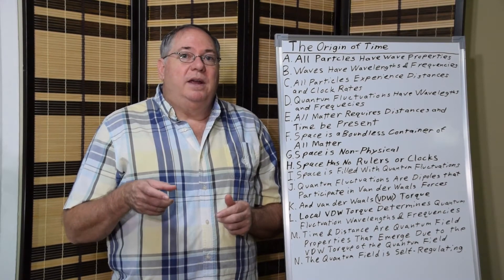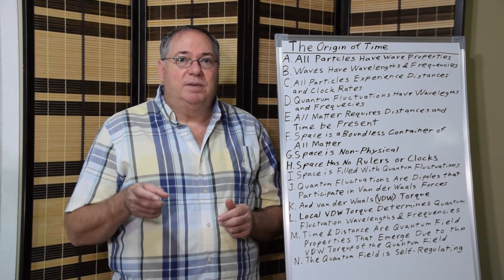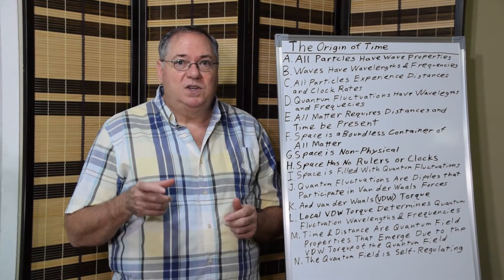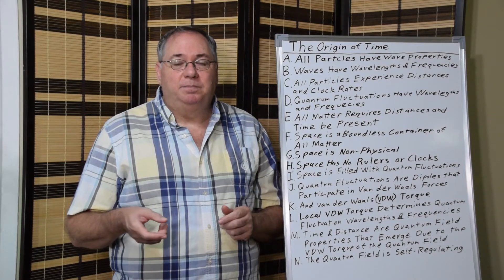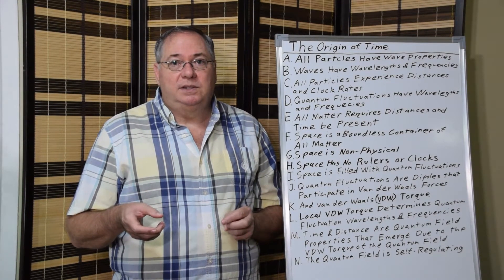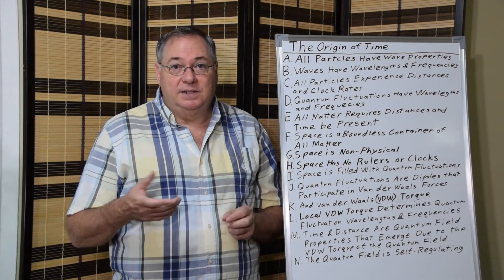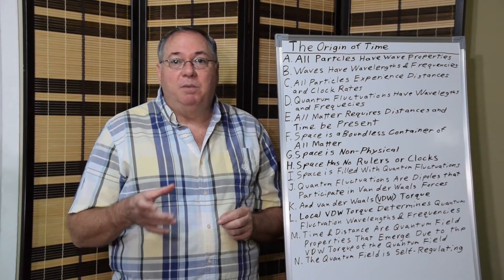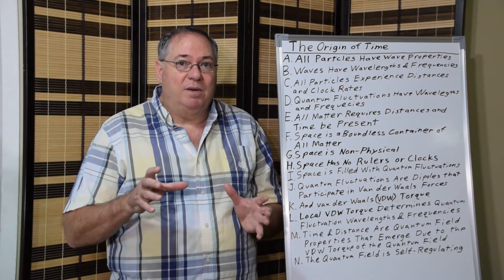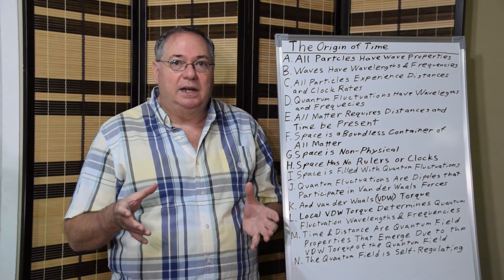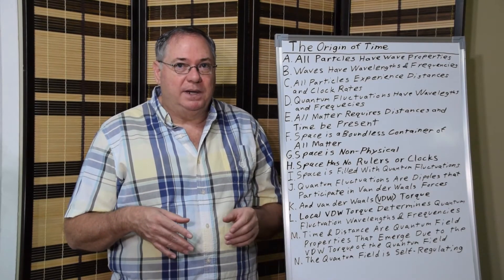And in turn, the wavelengths and frequencies of the quantum fluctuations give the quantum field dimensions and time. And that's where the physical dimensions and time come from. They emerge from the quantum field. They are a property of the quantum field. And the quantum field is entirely self-regulated. It has nothing to do with non-physical space.